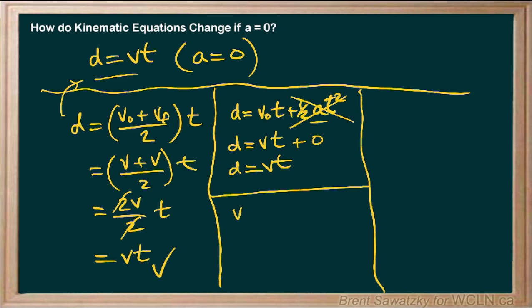Let's try another: vf equals v-naught plus a times t. If acceleration is zero, that whole term is gone, and we're left with vf equals v-naught. If there's no change in velocity, then vf equals v-naught — we'll just call it v. Again, it all makes sense. These formulas aren't anything new — a little more sophisticated, but the same consistent message.